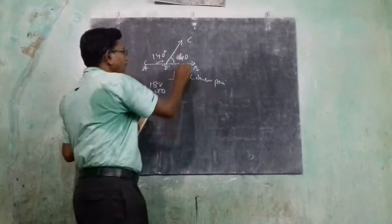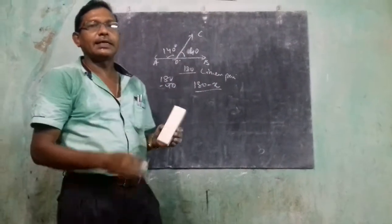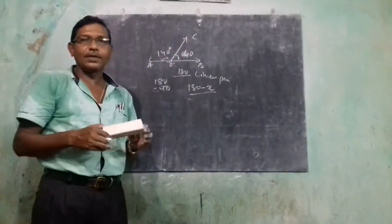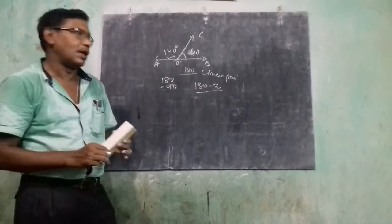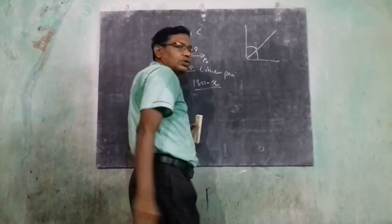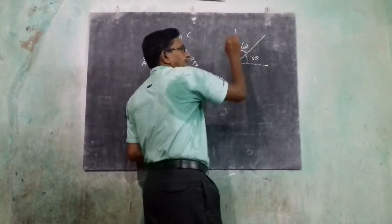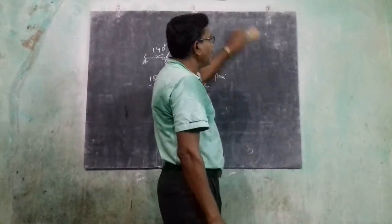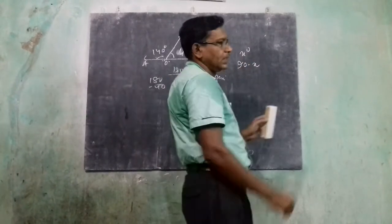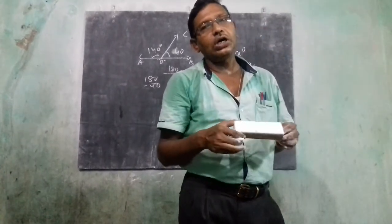If one angle is x degrees, its supplementary angle is 180 minus x degrees. Now, complementary angles: when the sum of two angles is 90 degrees, then one angle is the complement of the other. For example, if one angle is 30 degrees, the other is 60 degrees. If one angle is x degrees, its complementary angle is 90 minus x degrees.